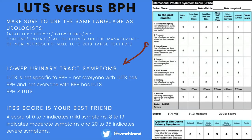We've moved the IPSS questionnaire online so patients can fill it out before their appointment. A score between 1 and 7 is mild, 8 to 19 is moderate, and 20 to 25 is severe. Give patients 20 minutes to fill it out. If they haven't completed it by the time I walk into the room, I walk back out and tell them to take their time. It gives you literally 90% of the information you need.